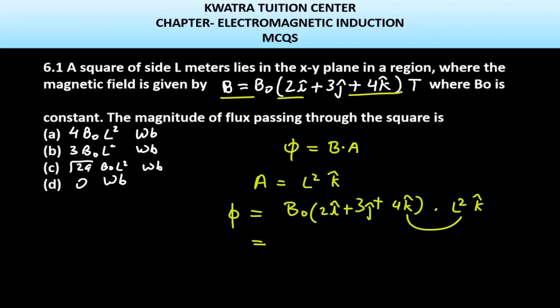Last, you're left with k̂·k̂. From this the value comes out as B₀ times 4 times L², and k̂·k̂ equals 1. So your value is, according to the options given, 4B₀L² Weber.